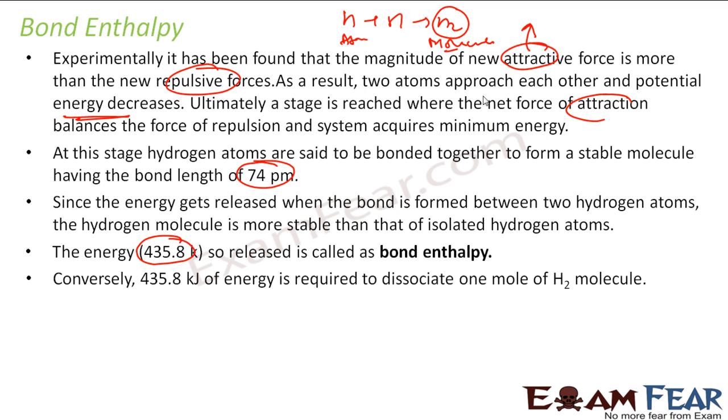Conversely, if you have a hydrogen molecule and want to convert it to hydrogen atoms, you need 435.8 kilojoules of energy to convert one mole of hydrogen molecules to hydrogen atoms.